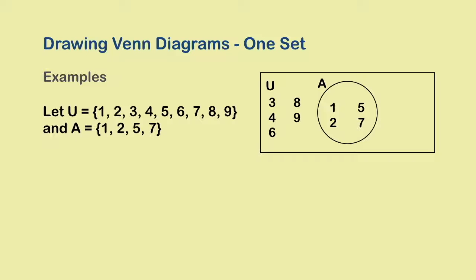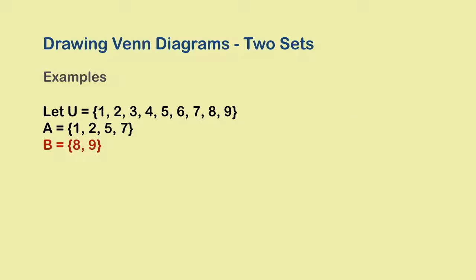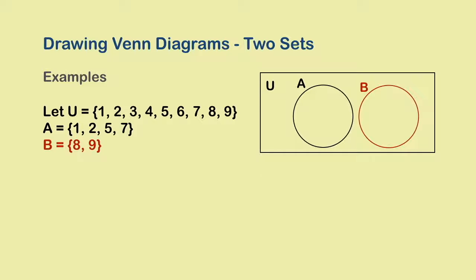Now, let us change this problem a little bit. Let's bring one more set in the picture. We now have another set B with elements 8 and 9. Like any other set, this will also be a subset of the universal set. And so the circle representing B will also lie within the rectangle.